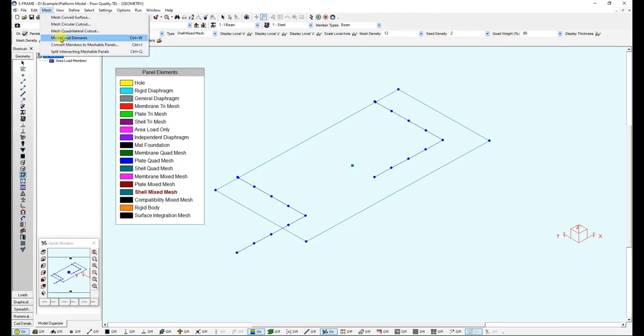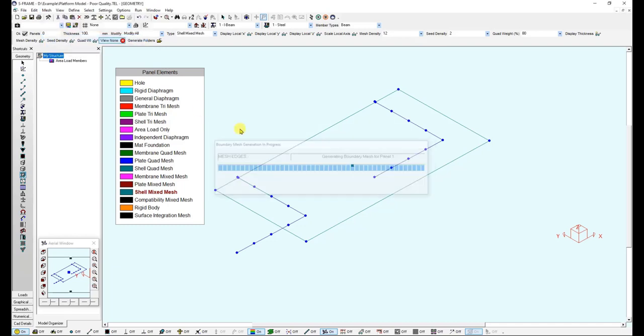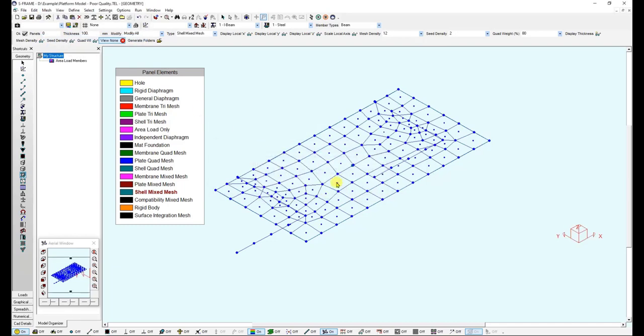Now I am ready to mesh. I am going to Mesh Panel Elements once again. Click yes, and here is the configuration. Now I see quadrilateral and equilateral triangles, and I am avoiding those long narrow elements.